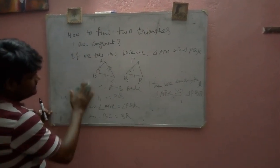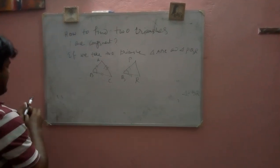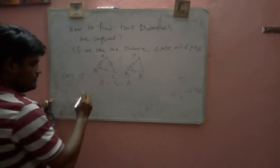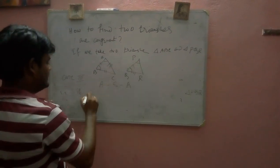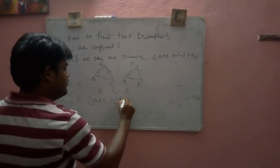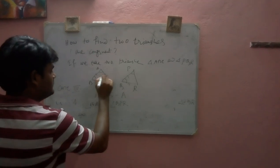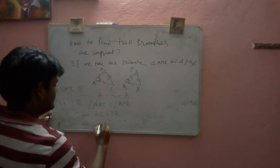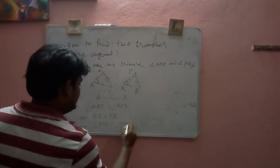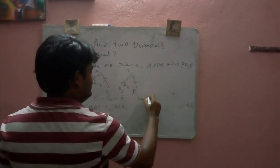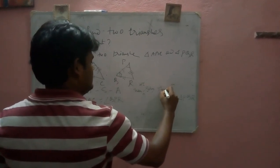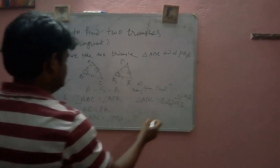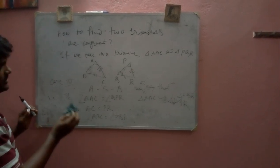Case three, that is Angle-Side-Angle. Suppose this angle and this angle are the same, that is angle BAC is equal to angle QPR, and this side and this side are the same — AC is equal to PR — and suppose this angle and this angle are the same, that is angle ABC is equal to angle PQR, then we can say that triangle ABC is similar to triangle PQR.